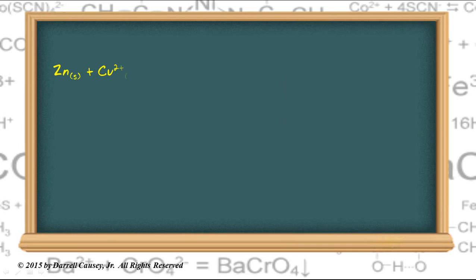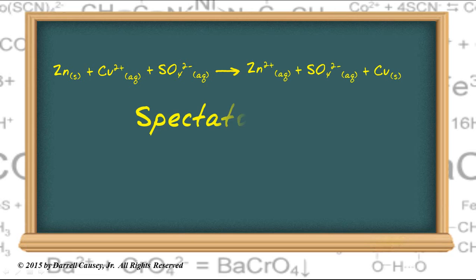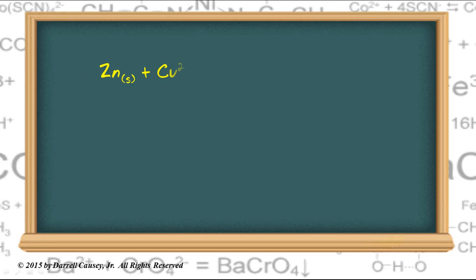Here's our whole total ionic equation. And note that we have some spectator ions. Sulfate is going to be canceled out. And then we can rewrite that. And there's our net ionic equation.